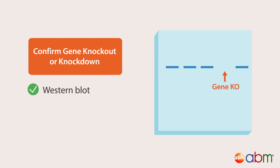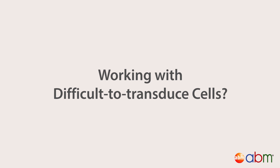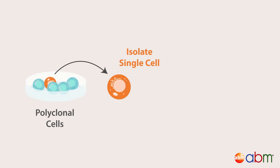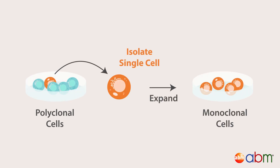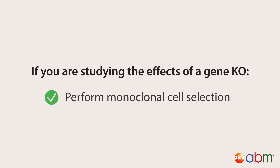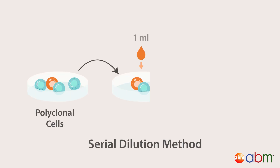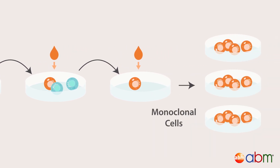A western blot assaying protein expression would be a better option. If you're working with difficult-to-transduce cells where less than 100 percent transduction occurs, you may want to isolate a single cell to expand into a monoclonal cell line. If you are studying the effects of a gene knockout, monoclonal cell selection is imperative. You can isolate a homogeneous monoclonal cell line using the dilution cloning method, where polyclonal cells are serially diluted until a single cell remains, which is then expanded to create your monoclonal cell line.